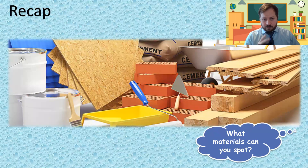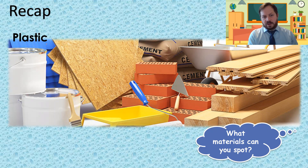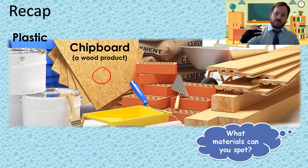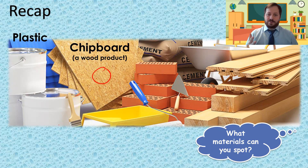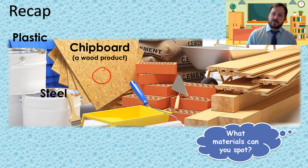Okay, so what materials did you spot? The first one we've got is plastic — the blue plastic over here. We're not entirely sure what it's used for but we can tell by the look of it that it is plastic. The next one we've got is chipboard, which is a wood-based product — wood that's been mulched down, broken into small pieces, and then compressed back together to form chipboard, which slightly changes the properties of the wood. Next, we've got steel, or some sort of metal alloy, used for these paint tins — they need to be strong and hold their shape.